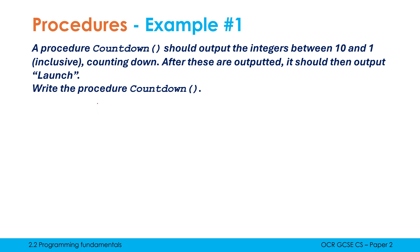The syntax in OCR exam reference language is to first write the word 'procedure'. In Python it would be 'def', but it's 'procedure' in ERL. You then write the name of your subprogram, which we've been told is countdown, and always put empty brackets afterwards. There can be things in the brackets called parameters, which we'll look at in a couple of minutes. That's our opening line of our definition.